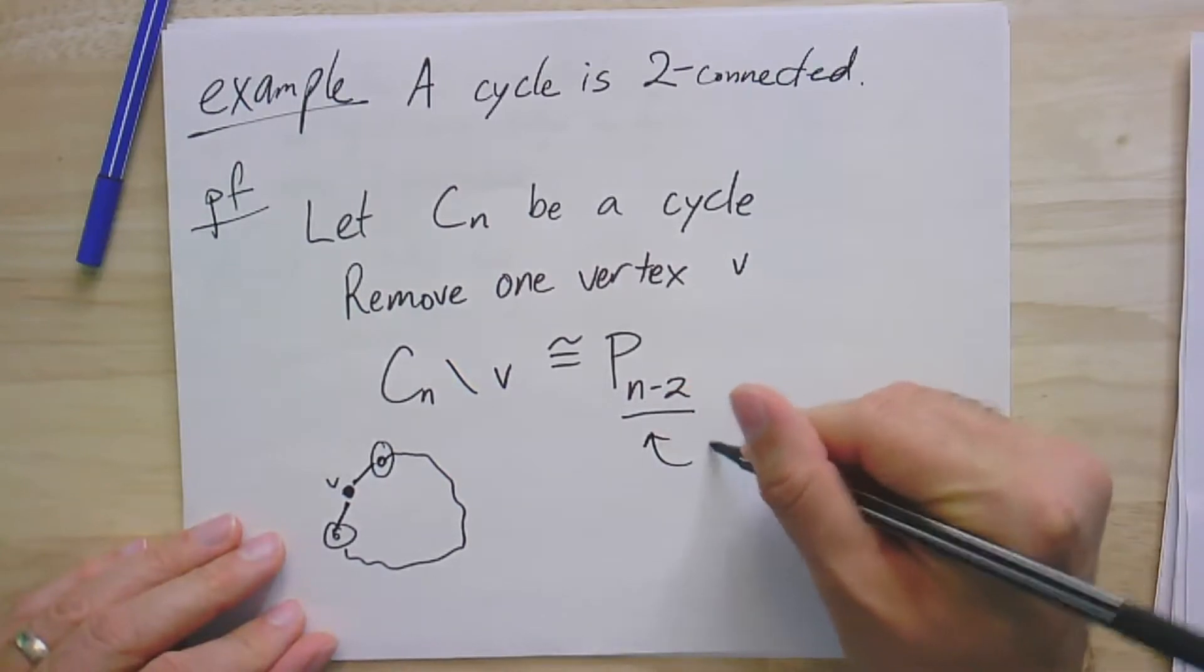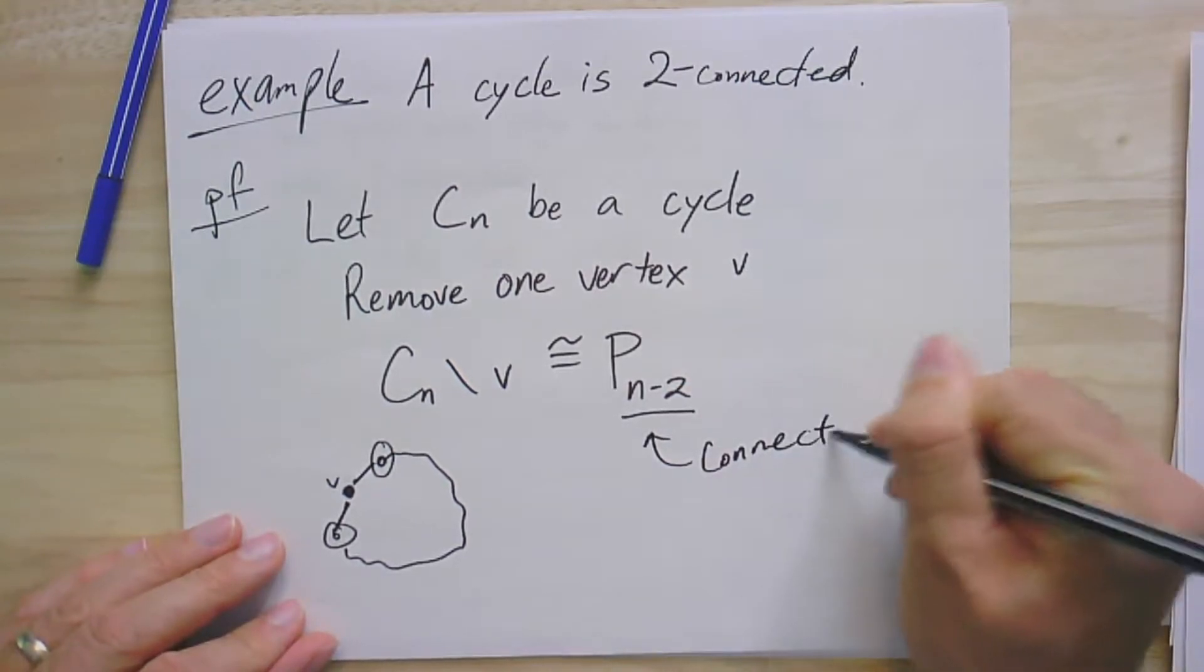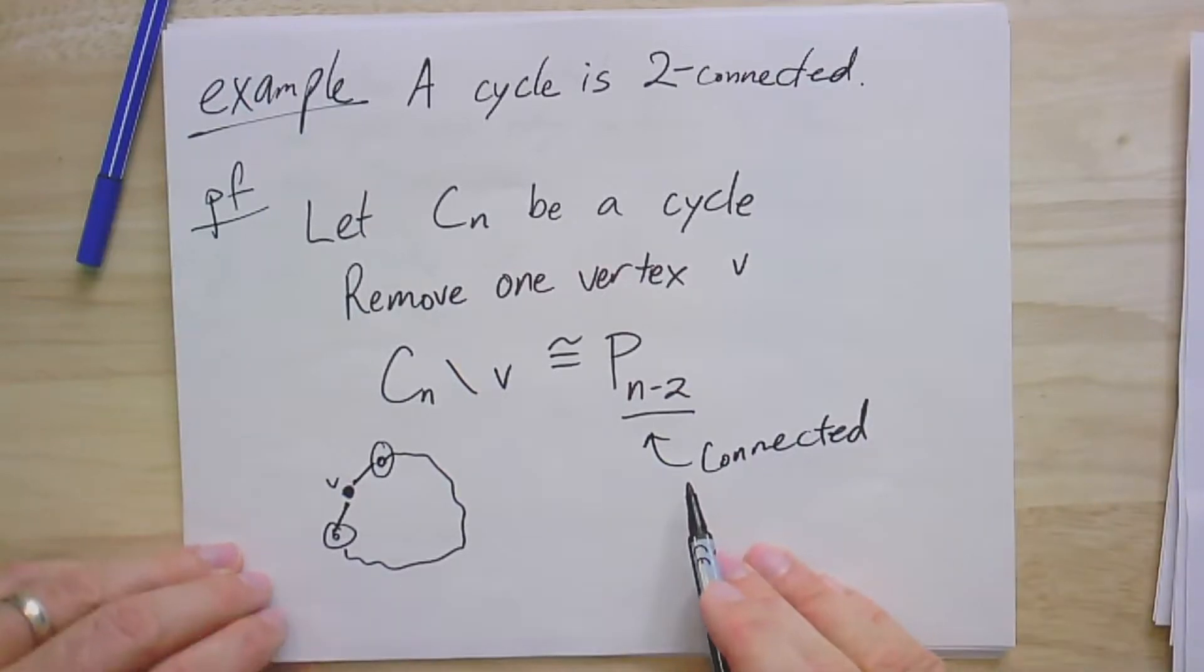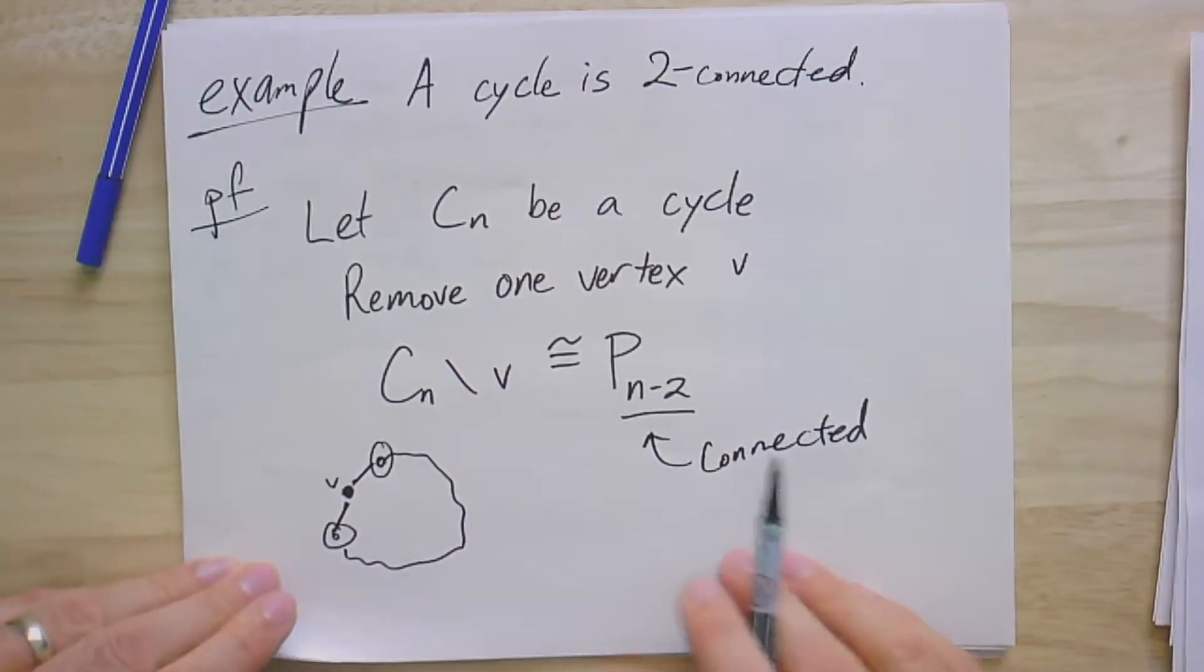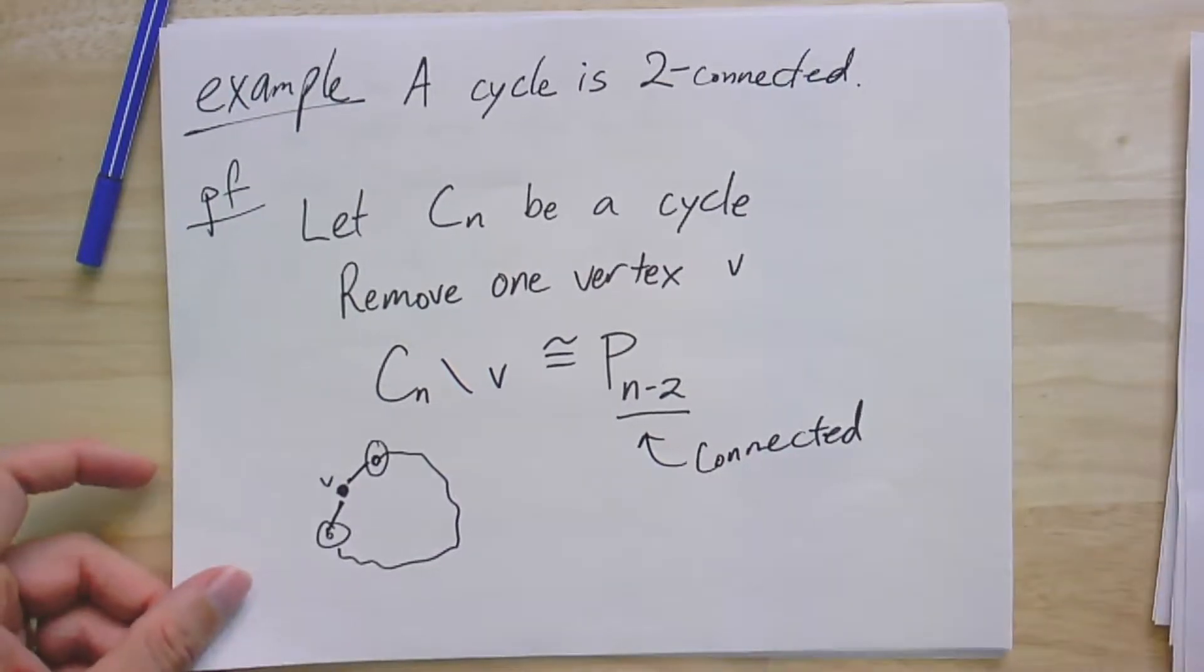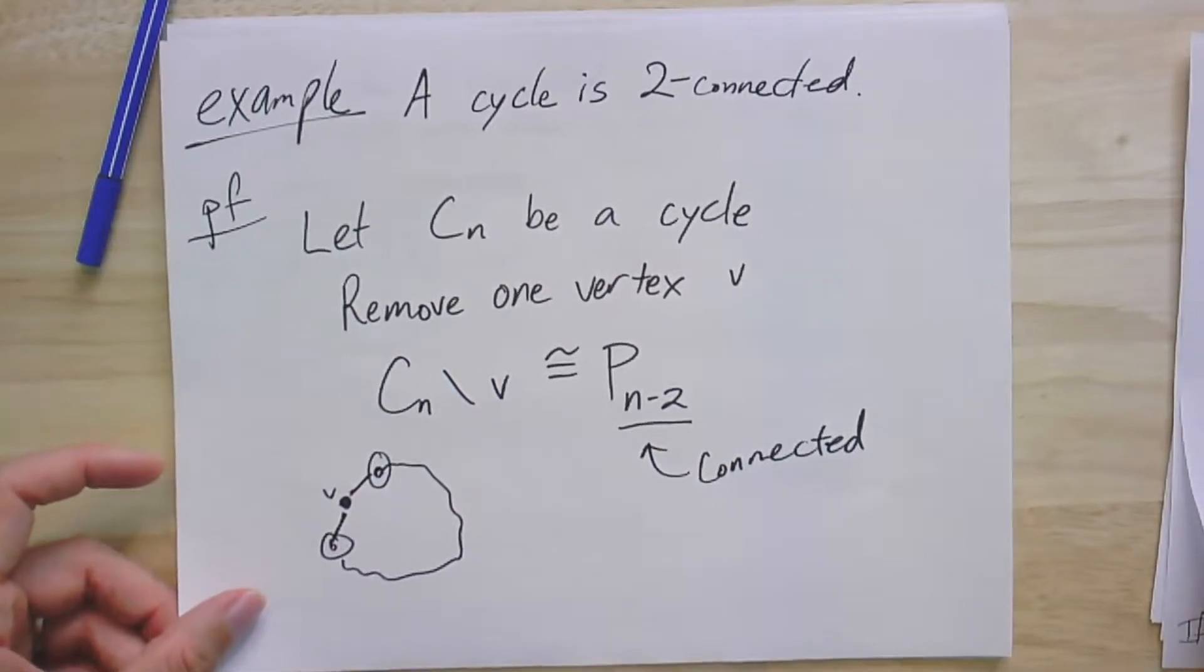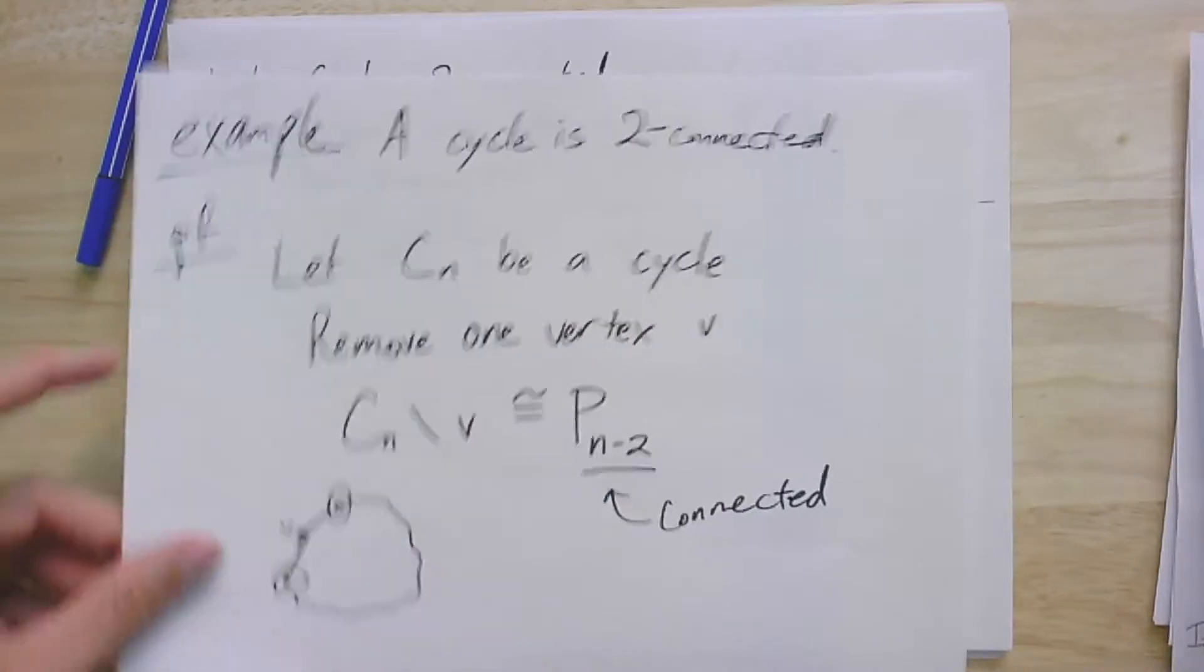Since this is connected, and we saw that connectivity is an invariant, so it's preserved under isomorphism, we know that no matter what single vertex we remove, we're going to end up with a connected graph. So that would be our first example of showing that a particular graph is two-connected. Here's another good example to work through.